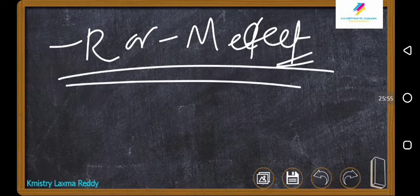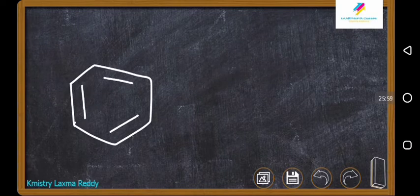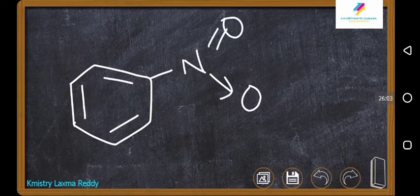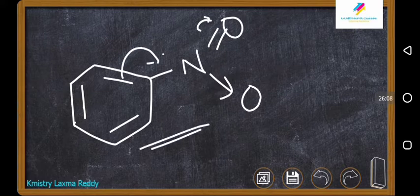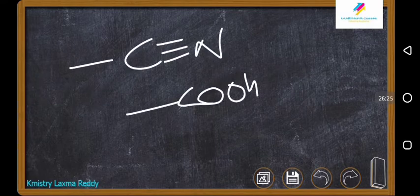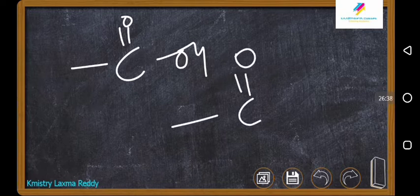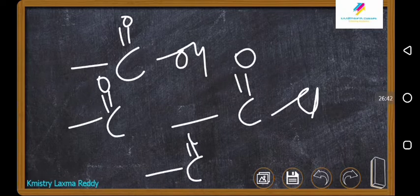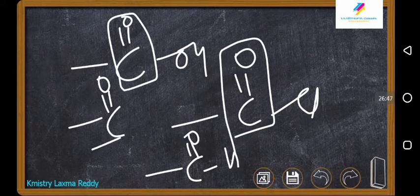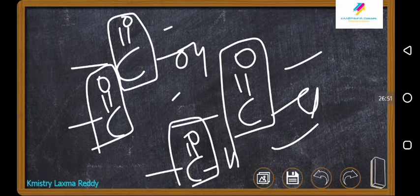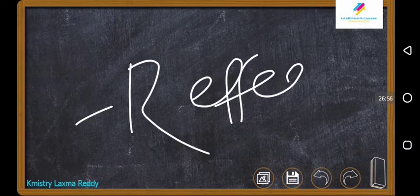Minus R (minus M) effect: when a group withdraws electrons from the benzene ring. For example, benzene attached to a –NO2 group (N=O with another O): the electrons move out of the benzene ring into the group. Groups exhibiting minus R effect include those with multiple bonds to more electronegative atoms: –C≡N, –CHO, –COOH, –COCl, –C=O — any group where a multiple bond exists with a more electronegative atom.